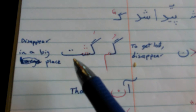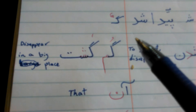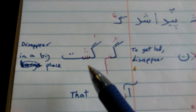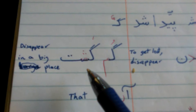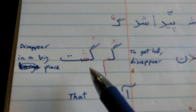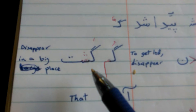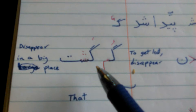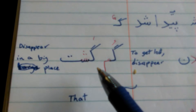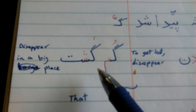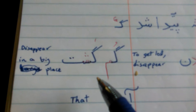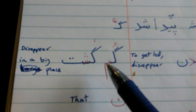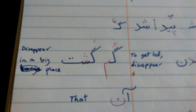'Gomgesht' — it's a past tense, with emphasis on disappearing in a large, spacious place, in a big place. 'Gomgesht.'